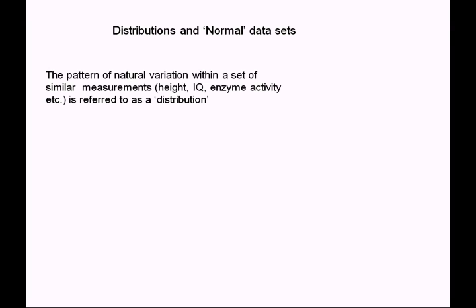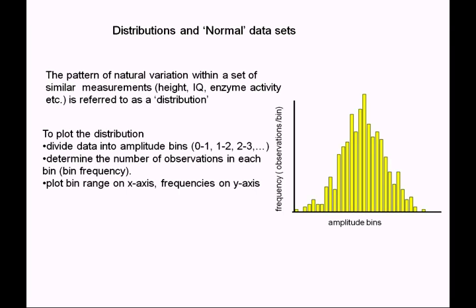We can plot those data by looking at the range of amplitudes of our individual data points, dividing that range into a number of bins or classes, and seeing how many observations fall into each one. I've plotted the frequency — the number of individuals — in each amplitude bin, with bins along the x-axis and frequency up the y-axis.